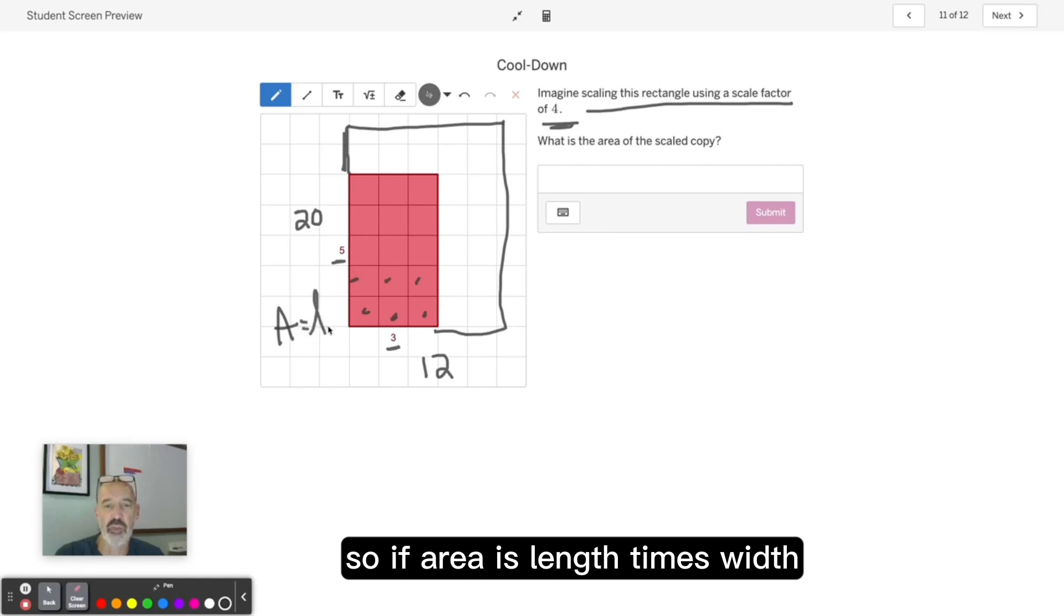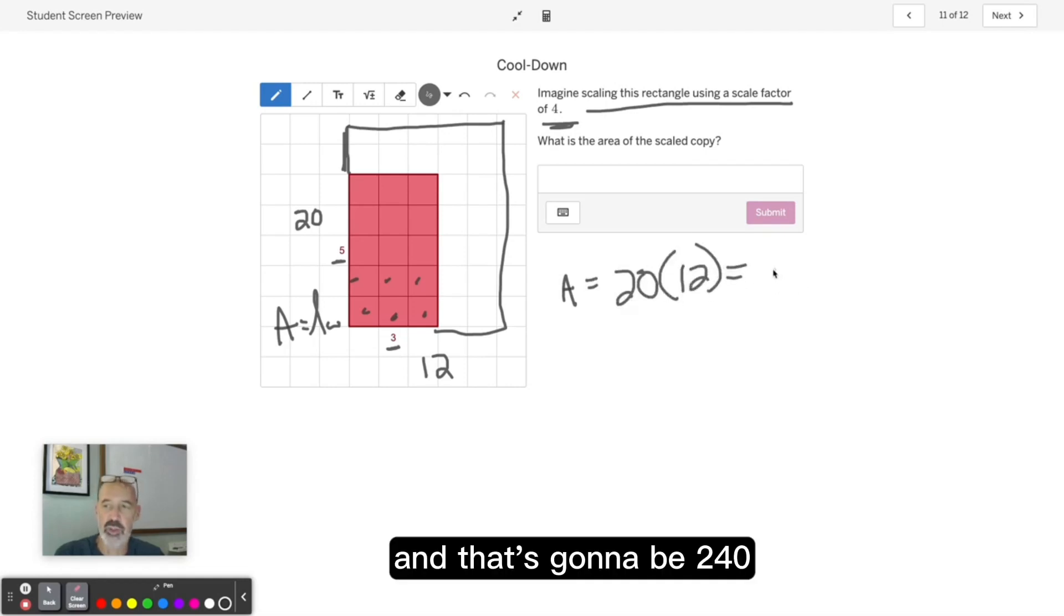So if area is length times width, then we need to figure out 20 times 12, and that's going to be 240.